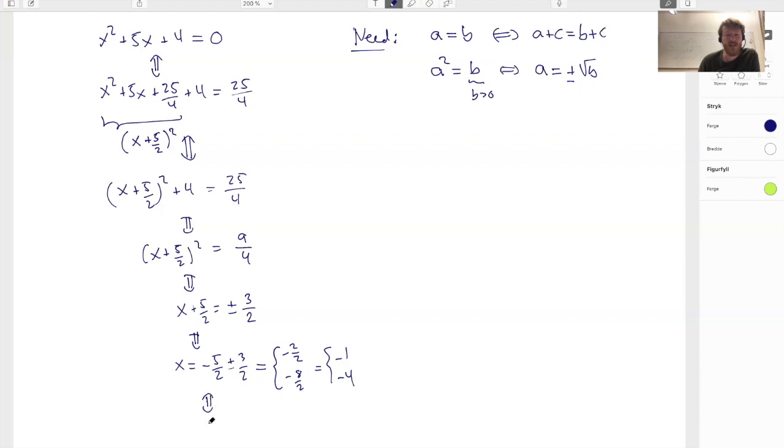So this is saying exactly, I could have written out here, x is equal to minus 1, or x is equal to minus 4. This is what I mean when I write this. So that actually solves my quadratic equation.